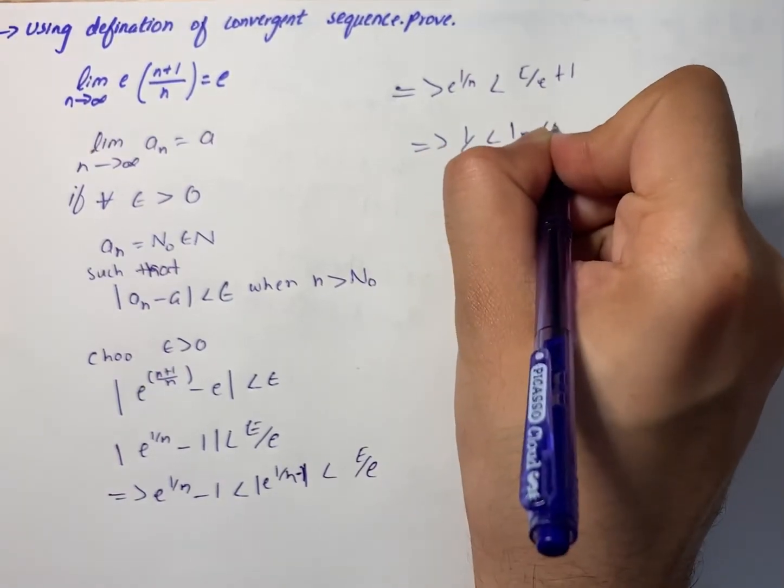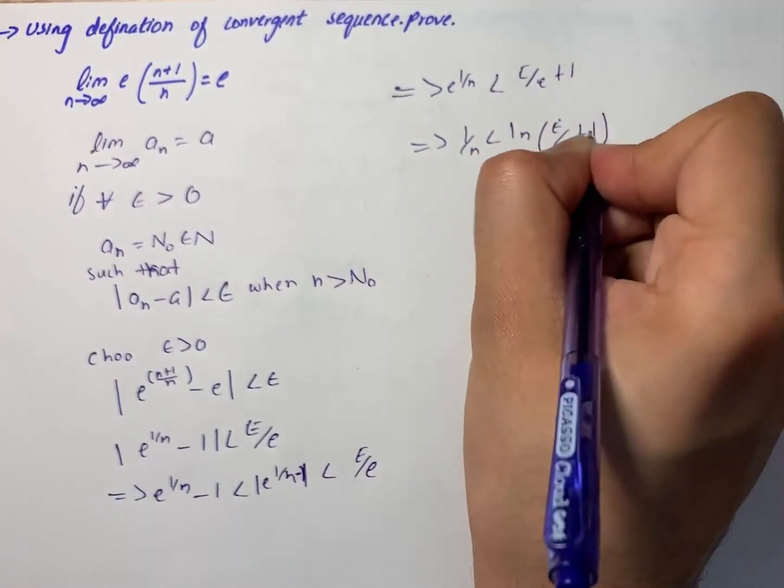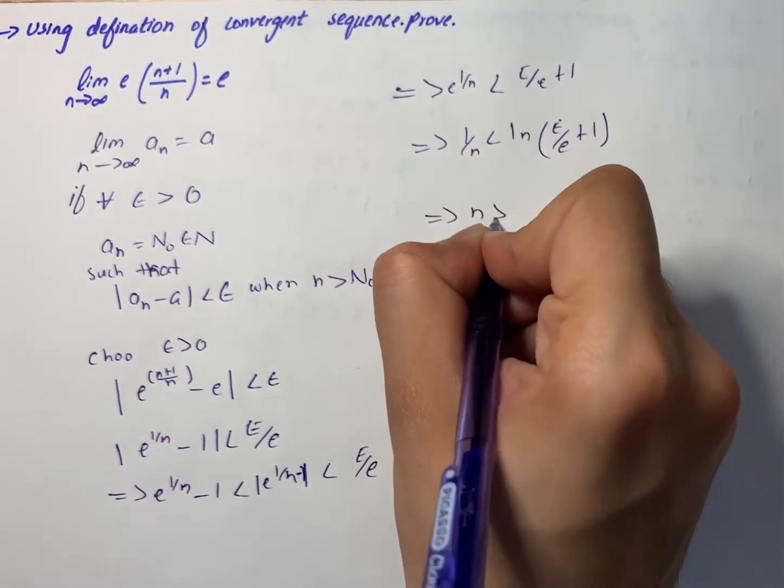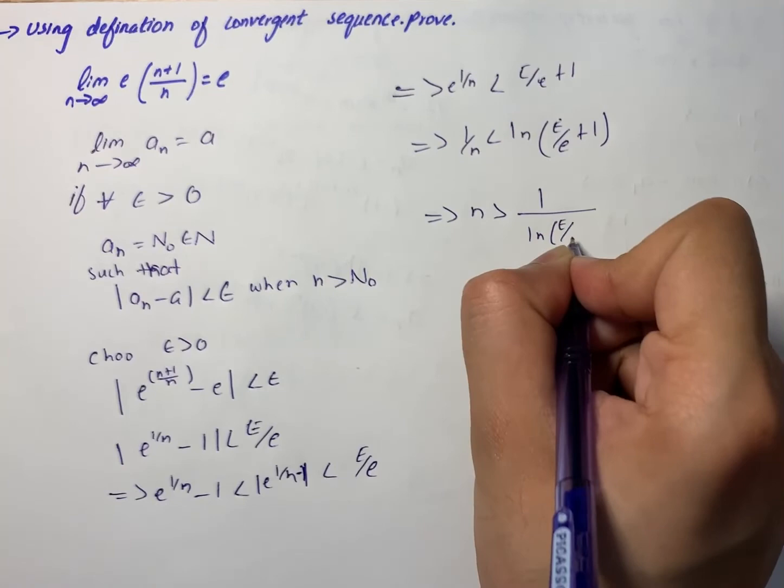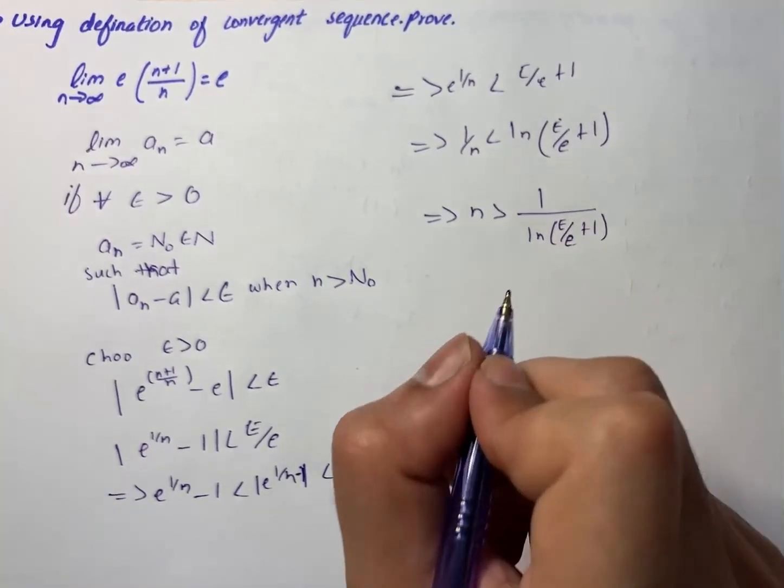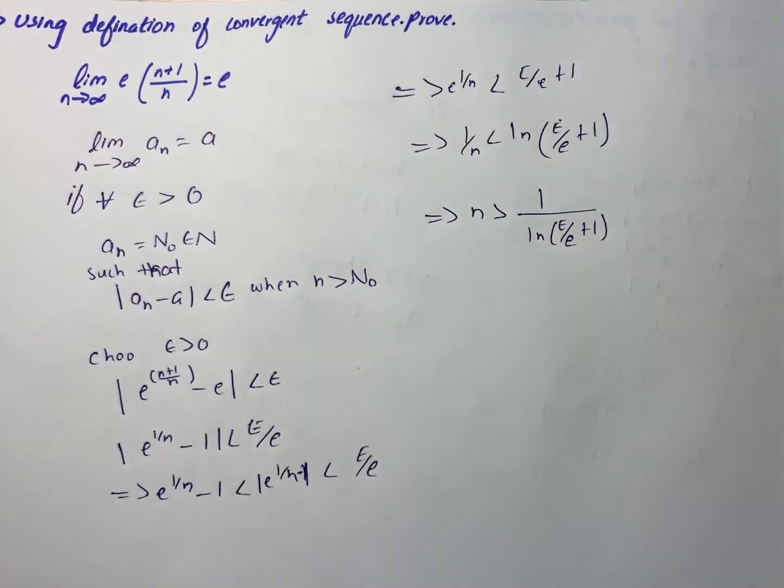So we write that n is greater than 1 divided by log of epsilon/e plus 1. Now we can find n_0.